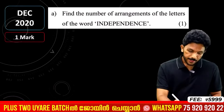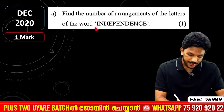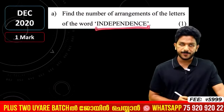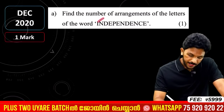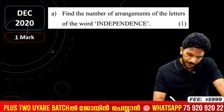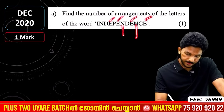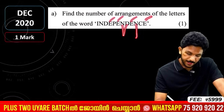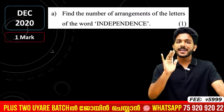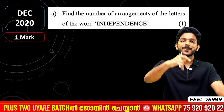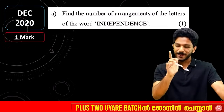Let's check in the calculator — 7,560. Now your homework: in the comments, find the arrangements of the word INDEPENDENCE. Note: E repeats 4 times, N repeats 3 times, D repeats 2 times. Post your answer in the comments!